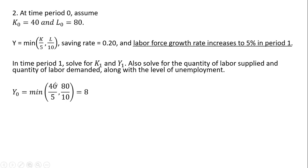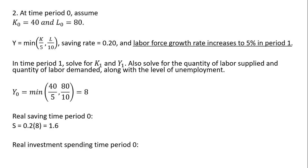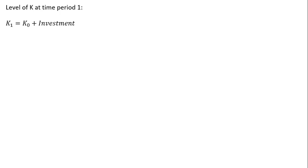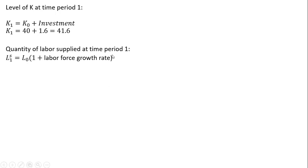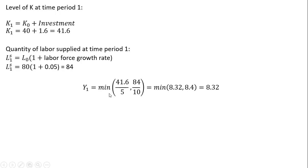Using our values at time period zero, this economy produces 8 units. The real saving rate is 0.2 times the level of output, giving 1.6, so real investment spending is once again 1.6. The level of capital at time period one is the level of capital in time period zero plus our level of investment spending: 41.6. For labor, to get the quantity of labor supplied at time period one, L subscript zero is 80 and the labor force growth rate is now 5 percent, giving a quantity of labor supplied of 84 units. Plugging 41.6 and 84 into our production function, output is the minimum of 8.32 or 8.4, so it's 8.32.